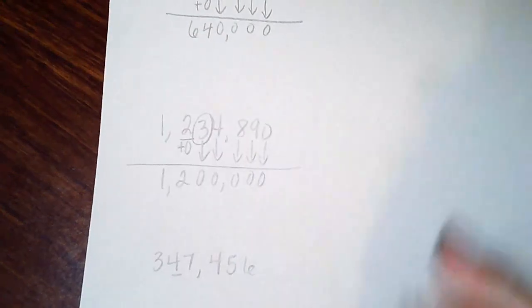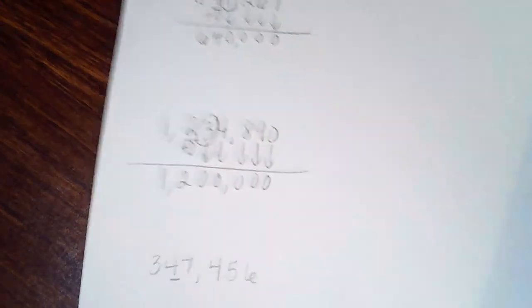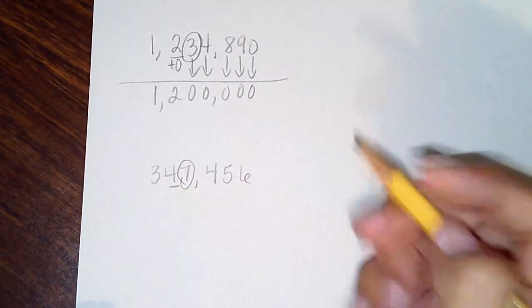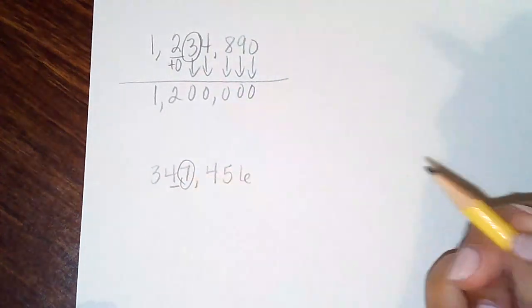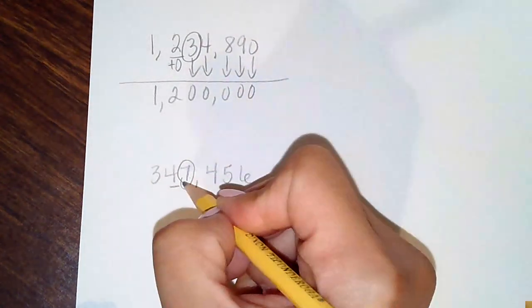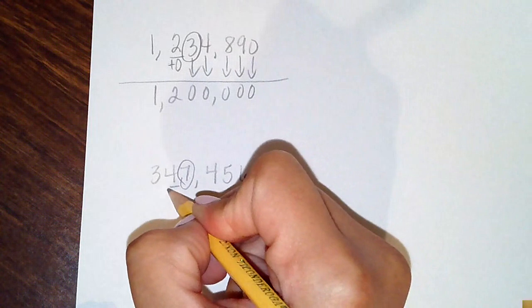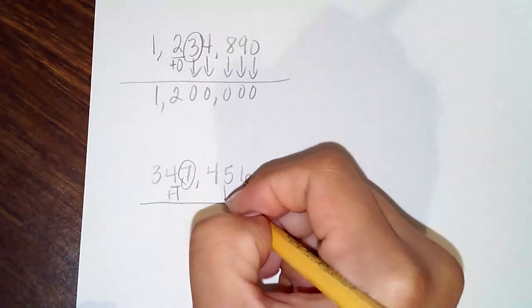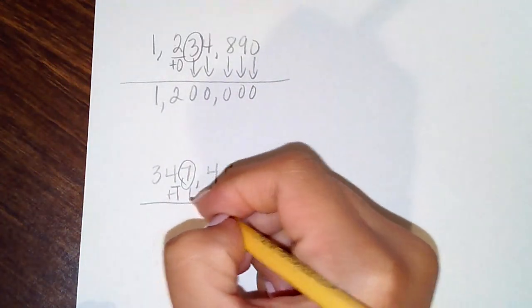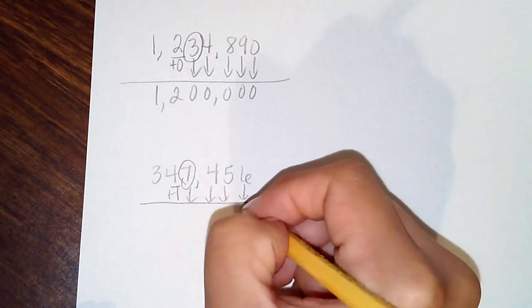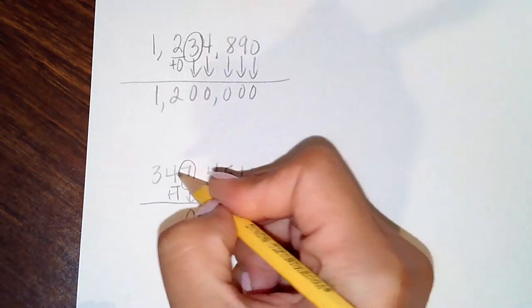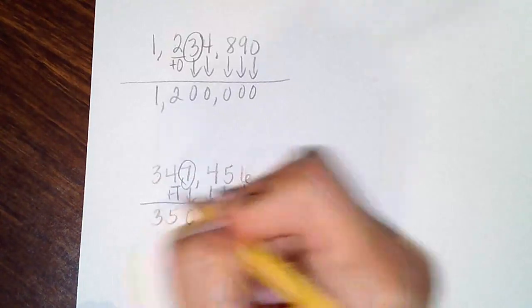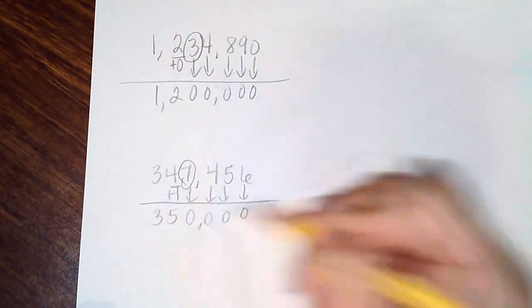Here they want you to round to the nearest ten thousands place. Seven is your boss — it's a big boss. So you add one to the underlined digit. The digits to the right turn to zeros. Four plus one is five, then your remaining digits: three, one-two-three.